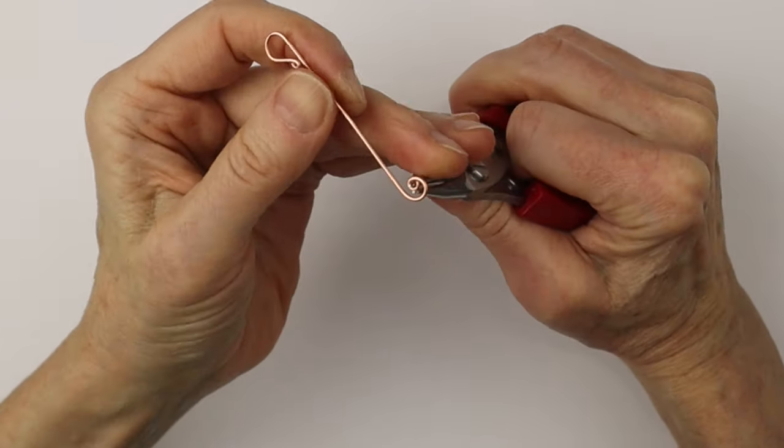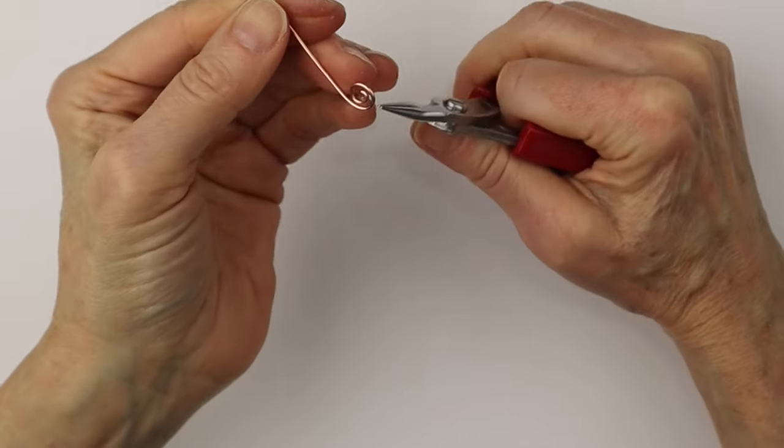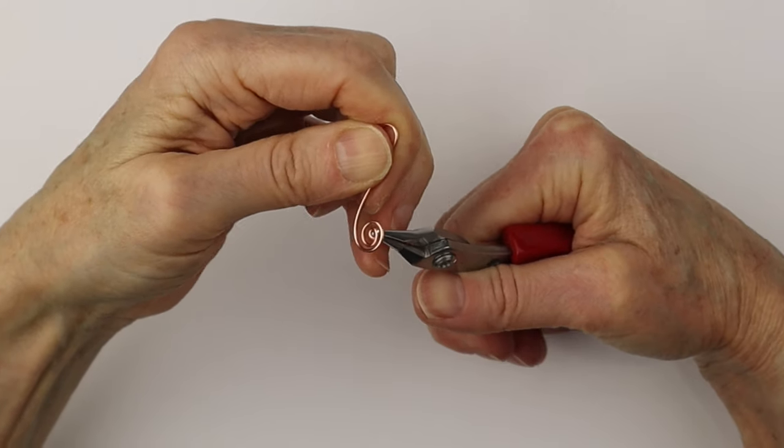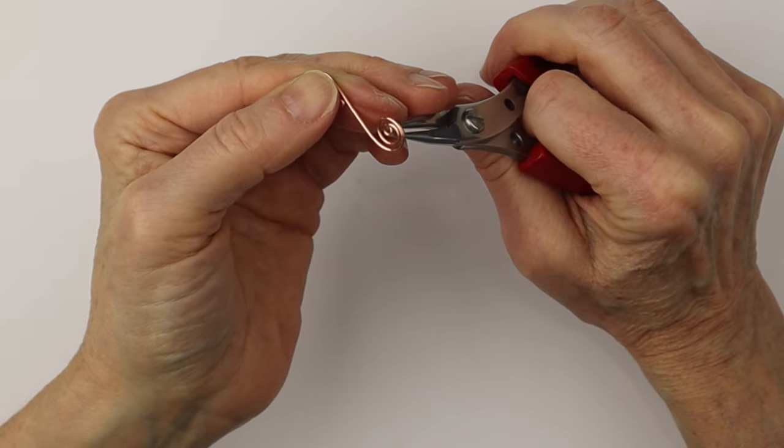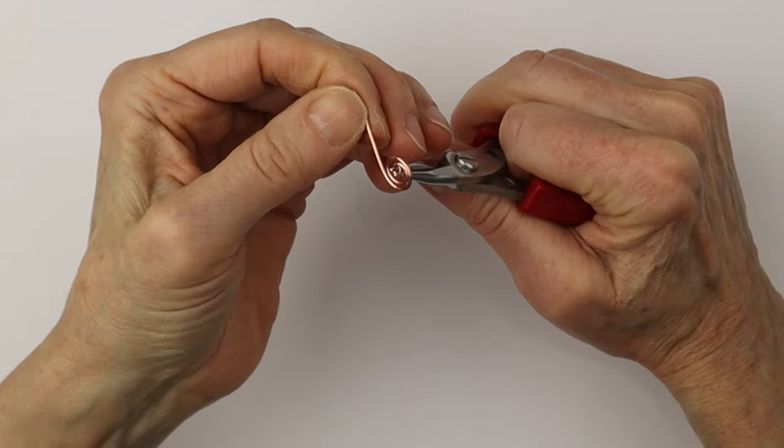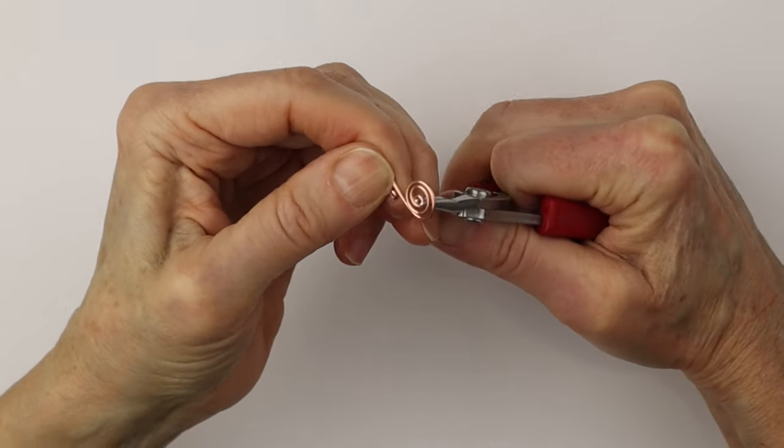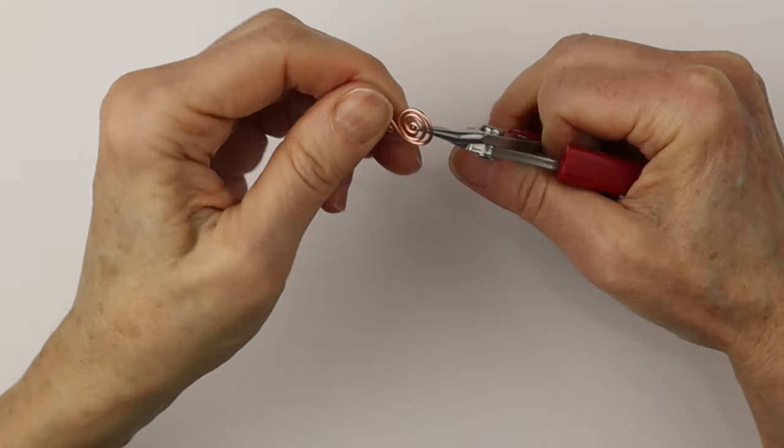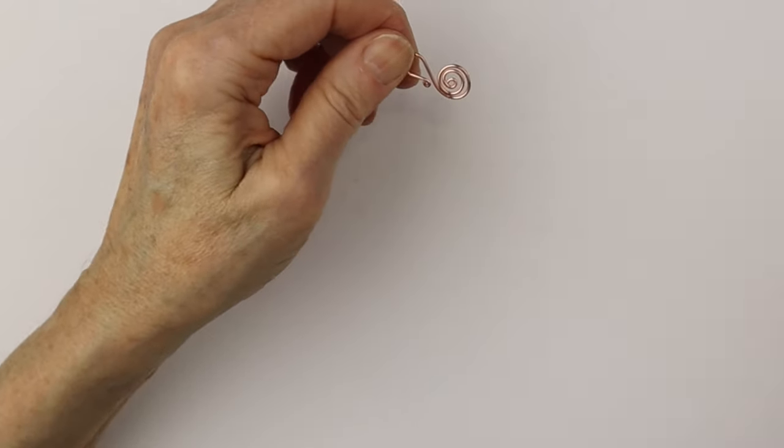We're going to just bring it in as we did with the first one, holding the loop with your thumb and finger and bringing the wire around with the pliers. Just a little flick of the wrist, bring it around, rotate it right around. Then use your thumb and finger if you need to adjust it a little more.